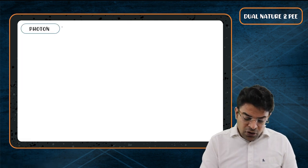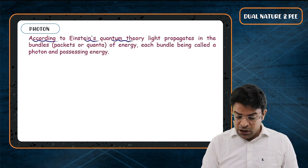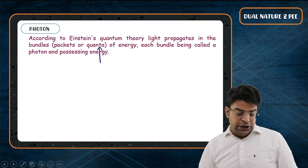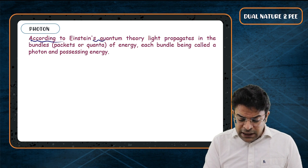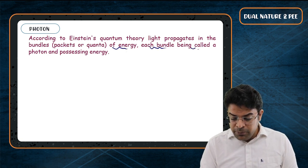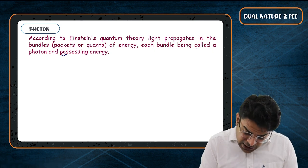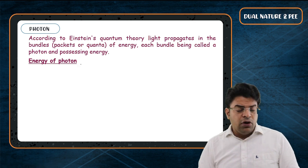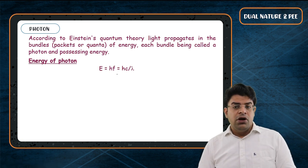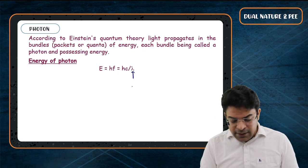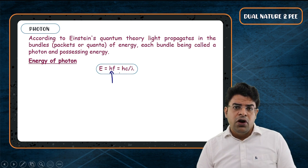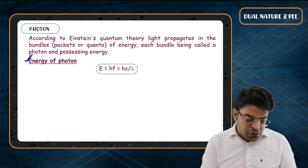According to Einstein's quantum theory, light propagates in bundles called quanta or photons, each carrying energy. The energy of one photon is E = hf, or equivalently E = hc/λ, where h is Planck's constant, f is frequency, c is speed of light, and λ is wavelength. The energy can be written as Planck's constant times frequency or hc divided by wavelength.